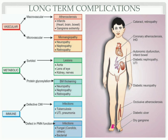Defects in PMN function — polymorphonuclear neutrophils — also cause infections like fungal infections such as candida albicans, and bacterial infection in the blood. Diabetic persons are more prone to getting infections easily. These are the long-term complications of type 2 diabetes mellitus, and these are the things you need to learn about diabetes mellitus.